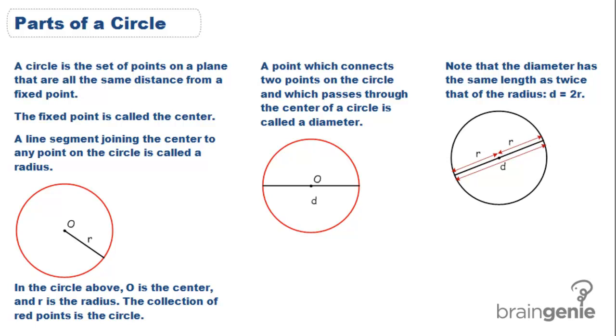A circle is a set of points on a plane that are all the same distance from a fixed point. In this circle, our fixed point is O. The fixed point is also called the center, and our circle is all of these dots that are the same distance from that center O.